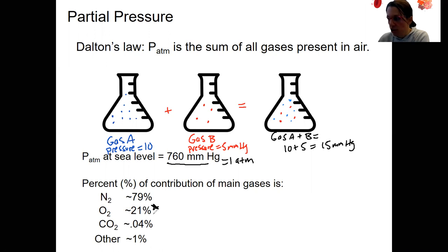We can use these numbers to figure out the partial pressure of each gas in the atmosphere. The partial pressure of this gas, partial pressure, let's say, of nitrogen, is going to be equal to the total pressure times the percent or the fraction that it contributes of that gas.